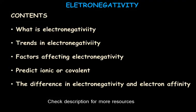In this video we will understand what is electronegativity, what are the trends in electronegativity across the period, and what are the factors affecting electronegativity. We will also predict, based on the difference in the electronegativity of the elements in a compound, whether a compound is ionic or covalent, and we will understand the difference between electronegativity and electron affinity.